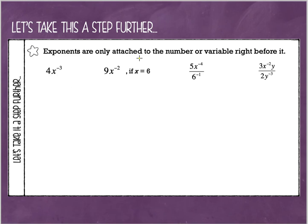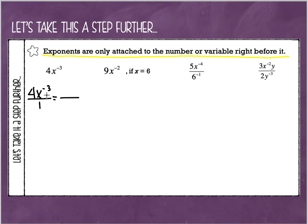Here is an important rule: exponents are only attached to the number or variable right before them. That is very important to remember. So when I look at 4x to the negative 3rd power, this negative 3 is only attached to the x — it is not attached to the 4. I'm going to rewrite this as a fraction. Since the negative 3 is only attached to the x, to change my negative exponent into a positive I move it down to the bottom with the x, which leaves the 4 on top. That's how we simplify that expression.